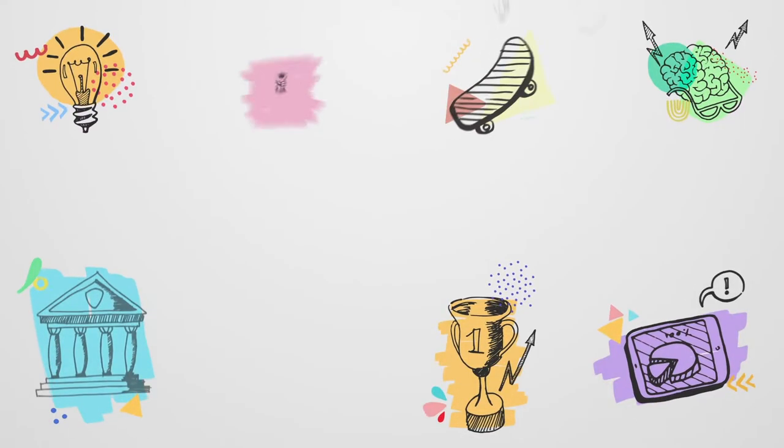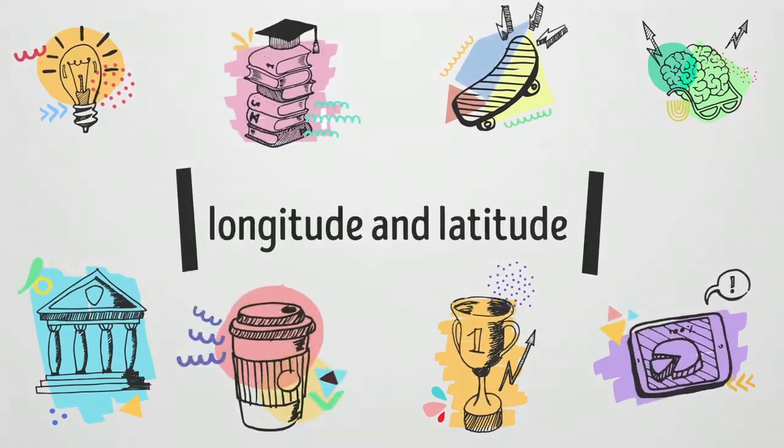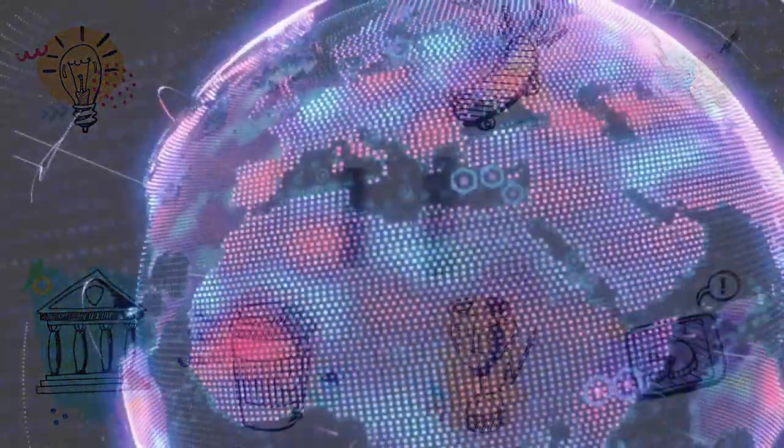For those wondering what ley lines are: ley lines are lines that crisscross around the globe, like longitude lines, that are dotted with monuments and natural landforms and carry along with them rivers of supernatural energy.